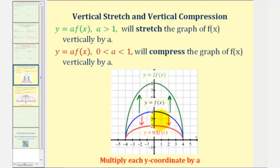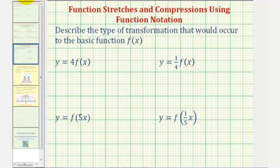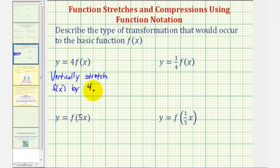So going back to our examples: if we have y equals four times f of x, this will vertically stretch f of x by four. And for y equals one fourth times f of x, this will vertically compress f of x by one fourth.